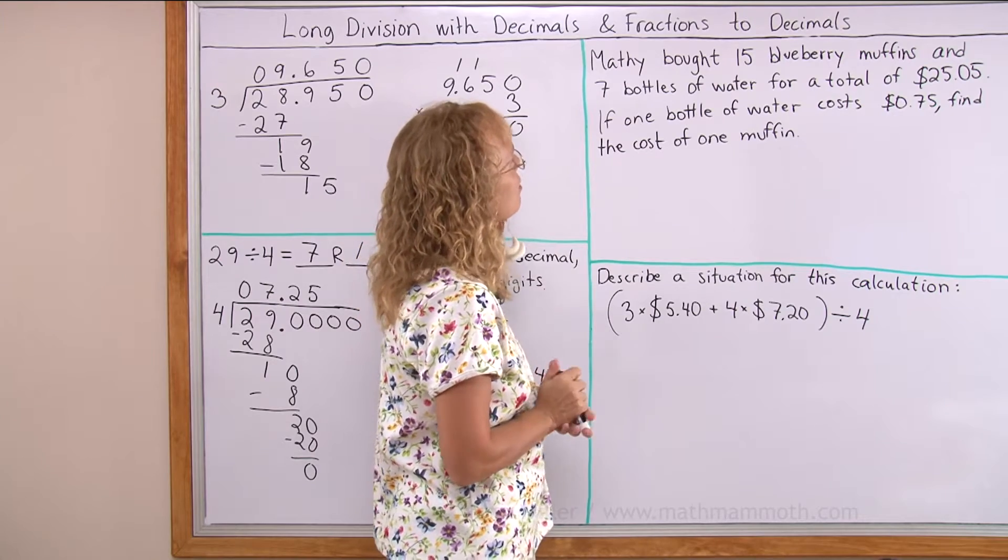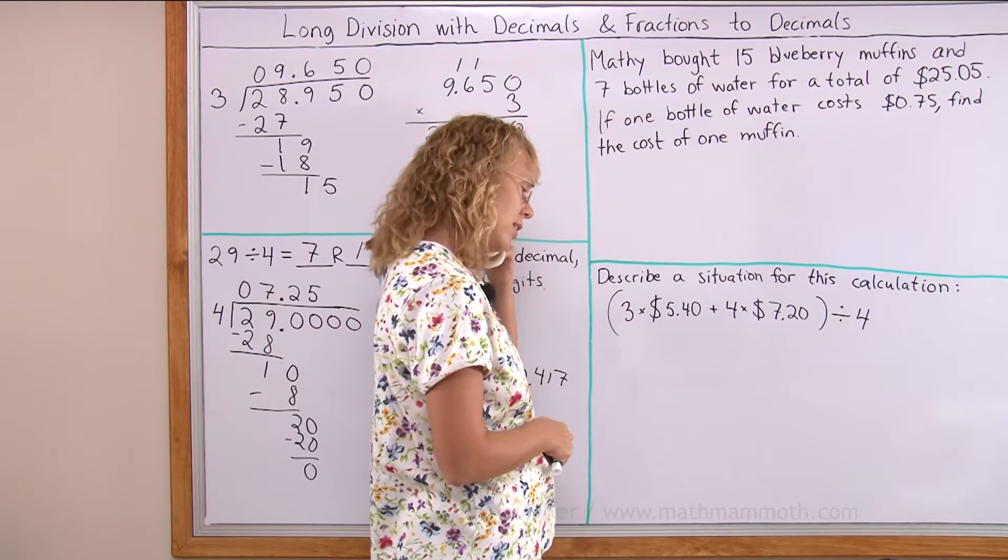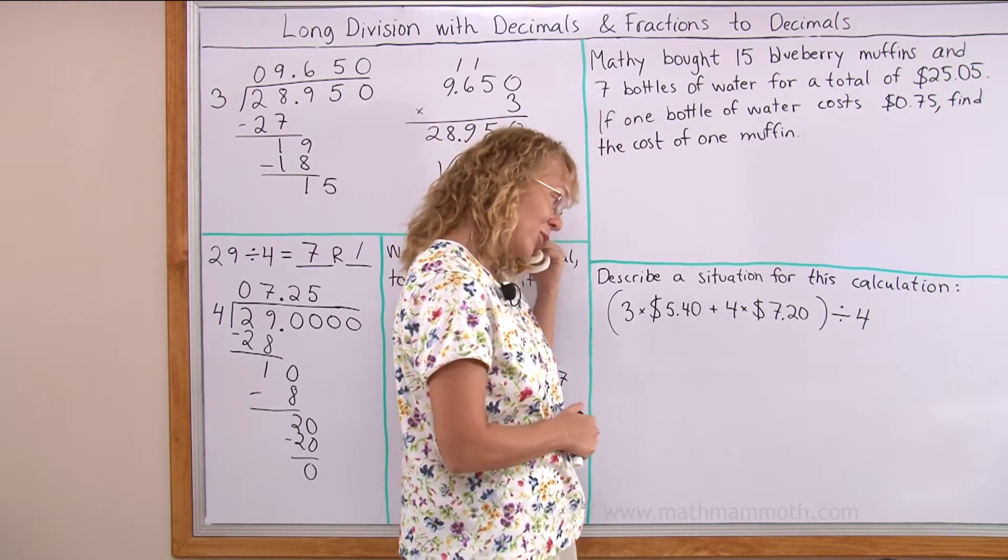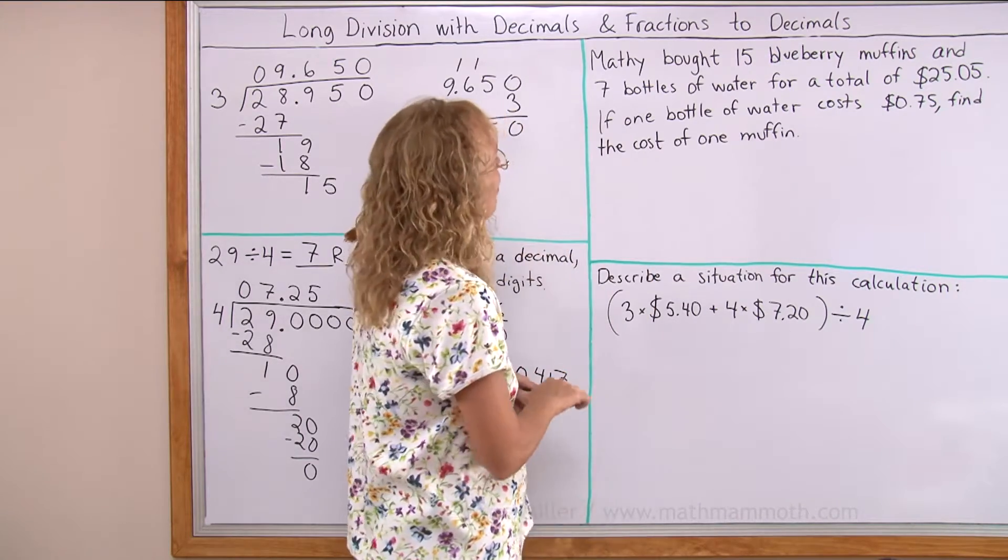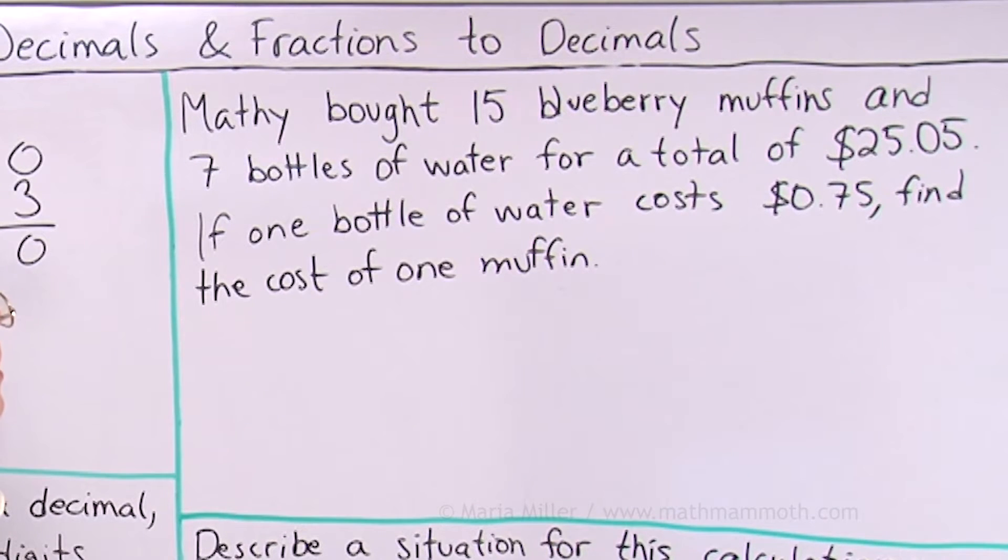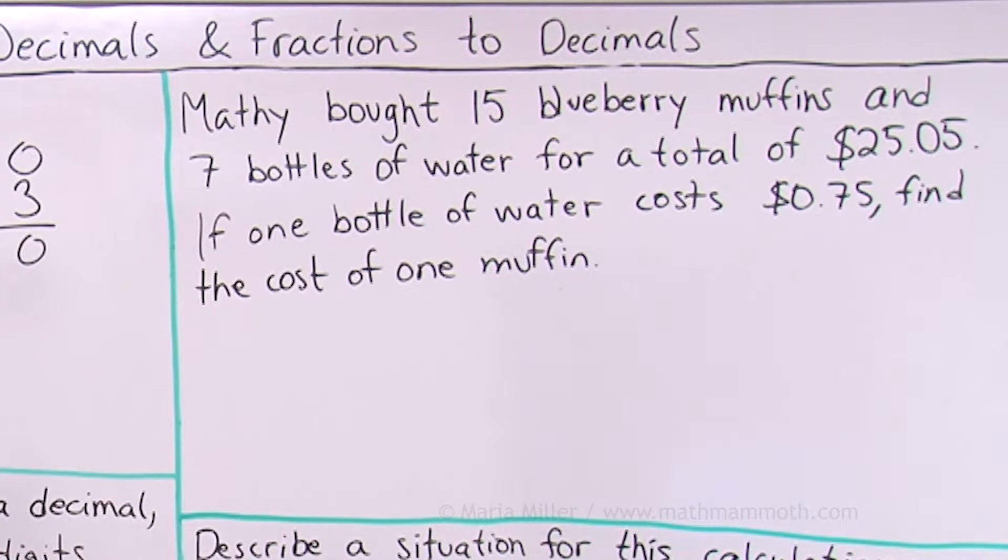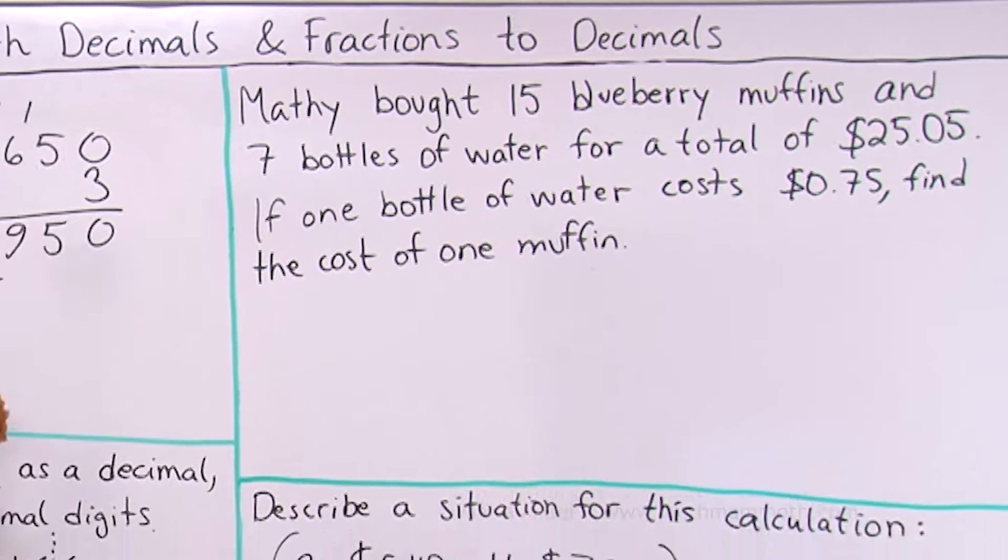Mathie bought 15 blueberry muffins again. You know, Mathie, I'm getting tired of these blueberry muffins. You are not? Sure. Mathie bought 15 blueberry muffins and 7 bottles of water for a total of $25.05. If one bottle of water costs that much, find the cost of one muffin.